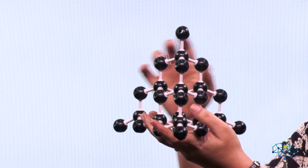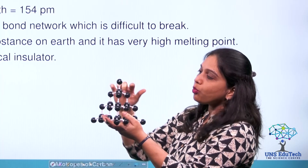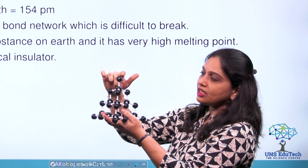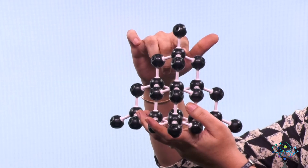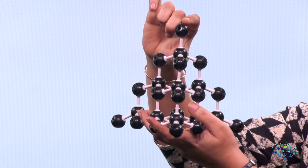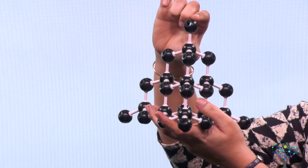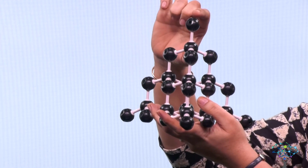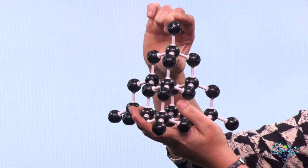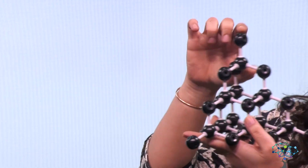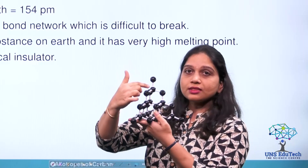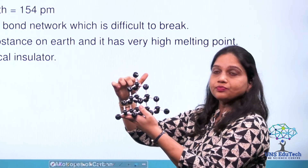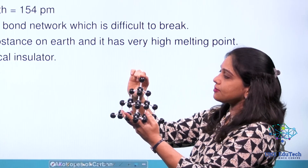Let us see the bond length. The bond length between each and every carbon atom is a single bond length — they are bonded through a single bond. This bond length is 154 picometers. Each single carbon-carbon bond is 154 picometers.